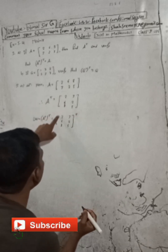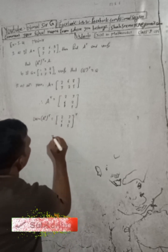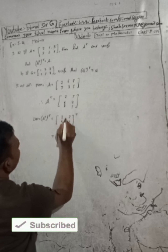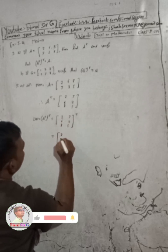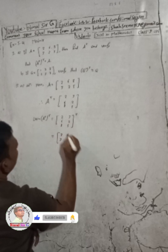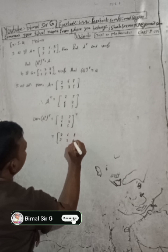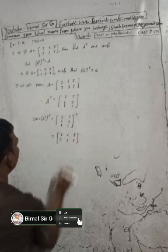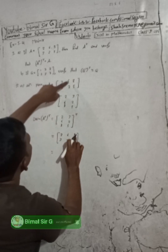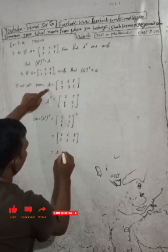Again we interchange the rows and columns. The first row becomes the first column: two three. The second row becomes the second column: six two. The third row becomes the third column: eight five. So this equals two six eight, three two five — which is A. Therefore LHS equals RHS, proved.